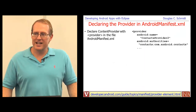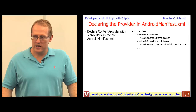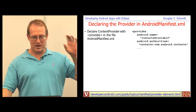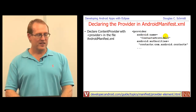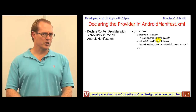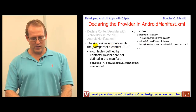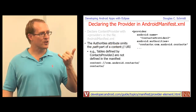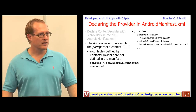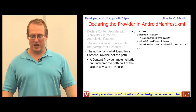To expose the provider, add a provider element in your manifest file. You give it a name — for example, ContactsProvider2 from the Android contacts provider — and specify the authorities. Note that the authorities list only the authority portion, not the path — the path is handled by the underlying content provider implementation, which interprets that data according to its own logic.